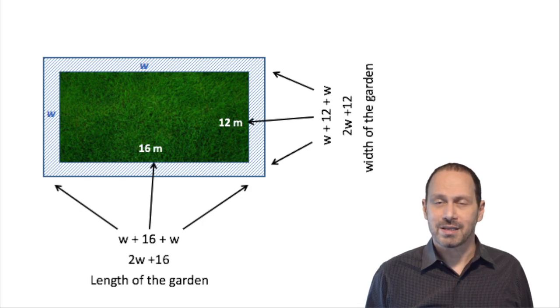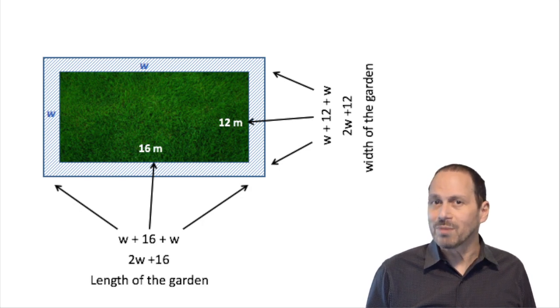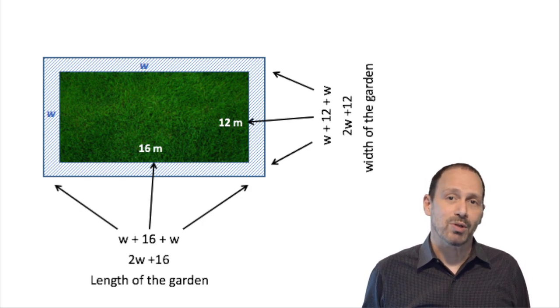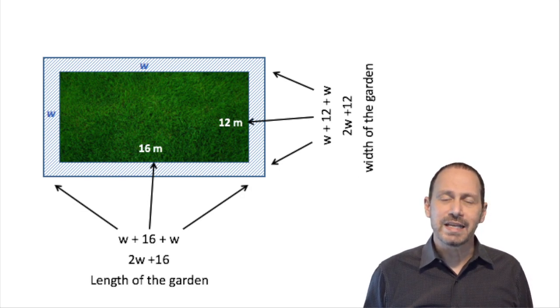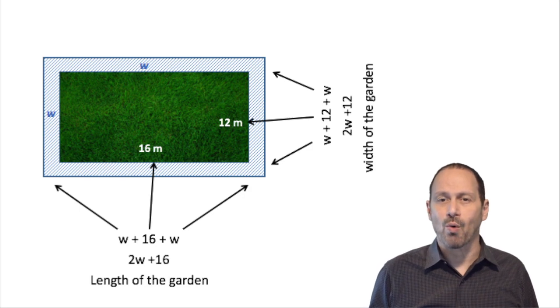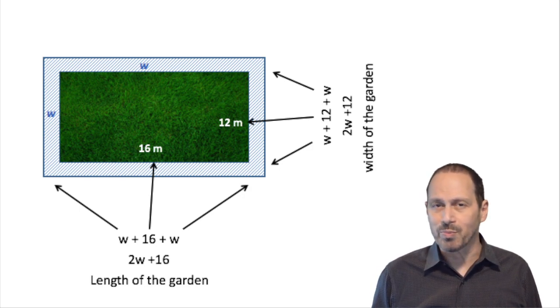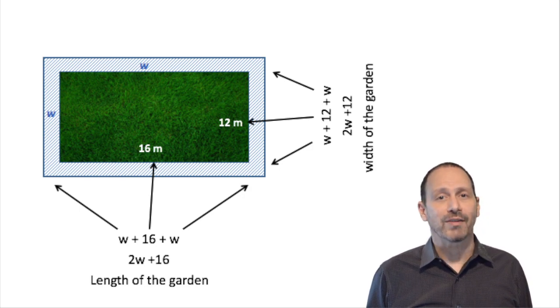Which can be further simplified as 2W plus 12. Now 2W plus 12 is the quantity that is going to represent the width of the garden.